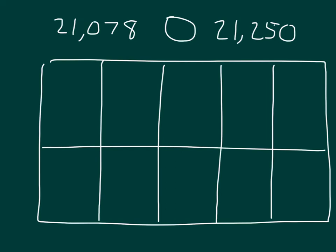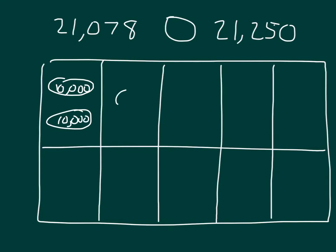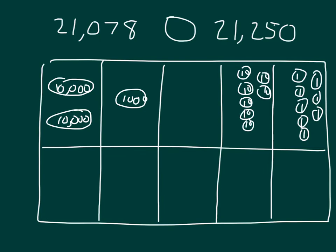Let's model and read each of these numbers. This number is 21,078, so we can go ahead and model it. This one's a five-digit number. We have two ten thousands, one thousand, seven tens, and eight ones. So that first number has been modeled — twenty-one thousand seventy-eight.